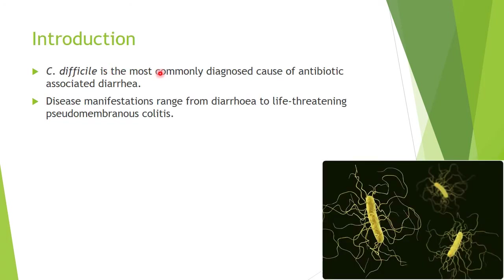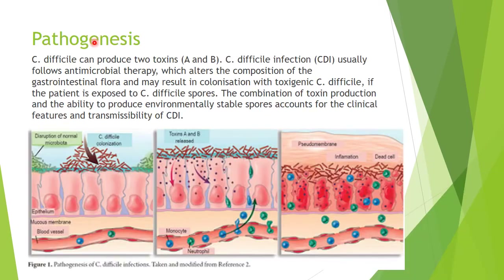Clostridium difficile is the most commonly diagnosed cause of antibiotic-associated diarrhea. Its manifestations range from diarrhea to life-threatening pseudomembranous colitis. The pathogenesis involves Clostridium difficile producing two types of toxin: toxin A and toxin B.